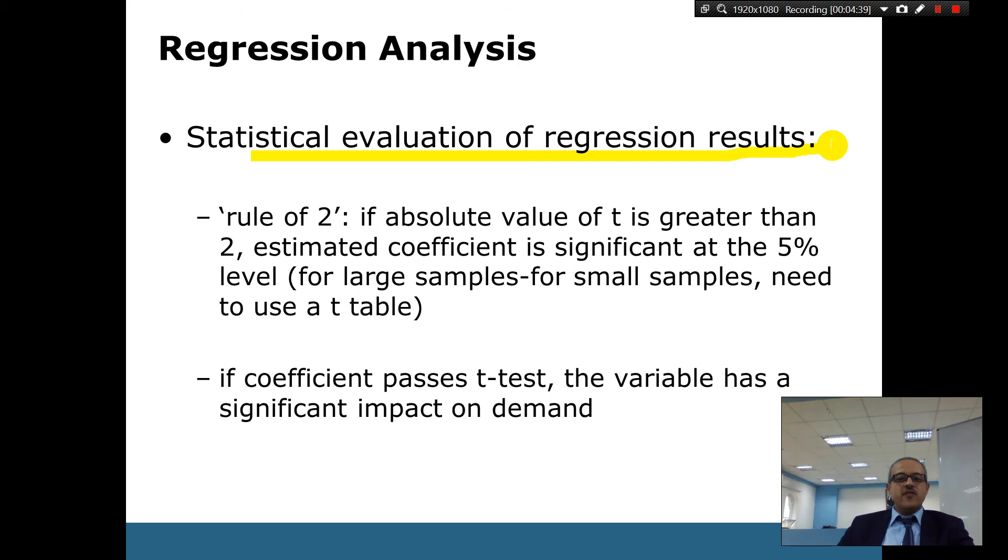Statistical evaluation of the regression analysis. So the rule of 2 is the absolute value. Remember, we use absolute because it can be positive or negative. It doesn't matter as long as it's 2. If it's greater, then the estimate is significant at the 5% level for larger samples. But now if it's a small sample, maybe you need to use the t-table. So maybe in our example, it wasn't very clear the rule of 2 because we had a small sample. If you get a huge sample, you always get more accuracy. And then now we've got if the coefficient passes the t-test, the variable has a significant impact on demand.